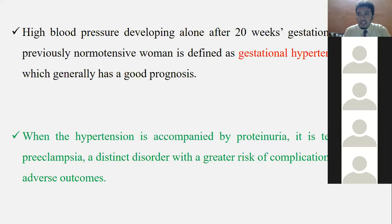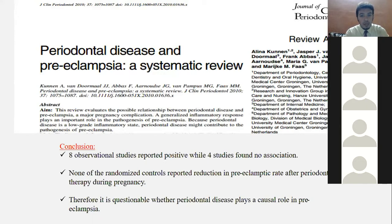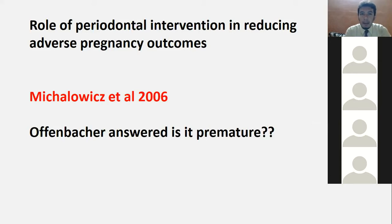Preeclampsia specifically refers to hypertension arising in the second or third trimester; if the female already had hypertension before pregnancy, it is not preeclampsia. Boggess 2003 found that maternal periodontal disease during pregnancy is associated with a very high risk of preeclampsia, with a higher proportion of preeclamptic women being subgingivally infected with periodontal bacteria. A 2010 systematic review by Kunnen and a 2013 study by Slogstra et al. confirmed a positive but weaker association.